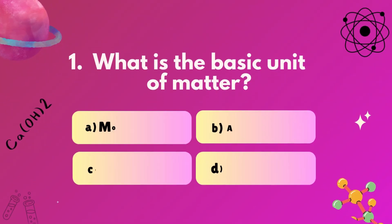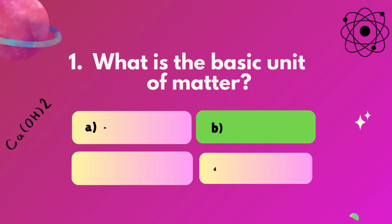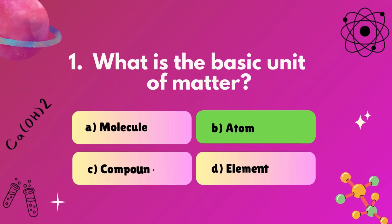Question 1: What is the basic unit of matter? A, molecule. B, atom. C, compound. D, element? Correct answer is B, atom.